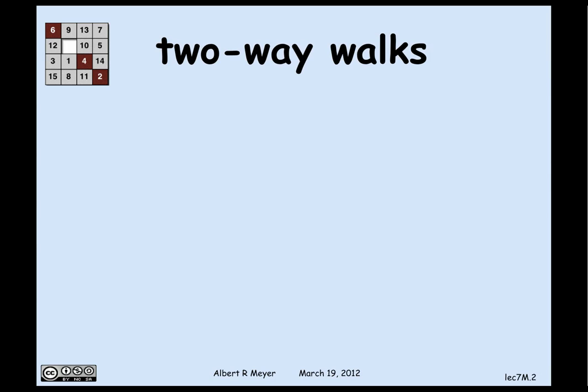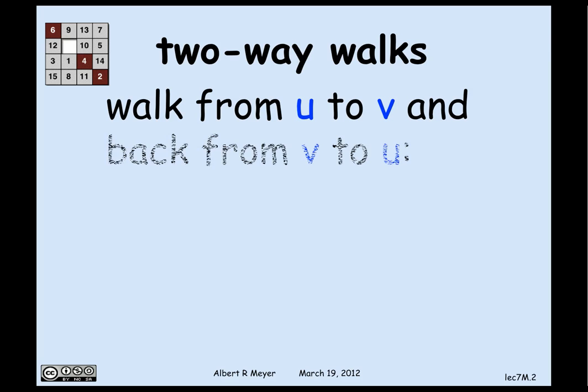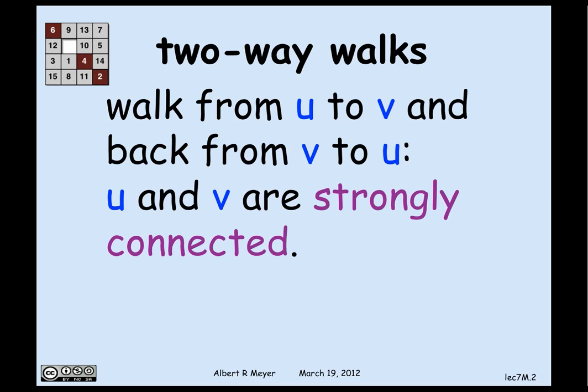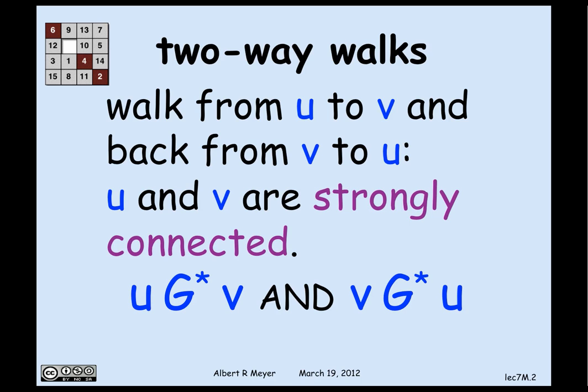The kind of relation that's an equivalence relation is the relation of there being a walk in both directions between two vertices. So if there's a walk between vertex u and vertex v, and conversely there's a walk from vertex v back to vertex u, then u and v are said to be strongly connected. In terms of the walk relation, including zero-length walks, the relation we're talking about is u →* v and v →* u.